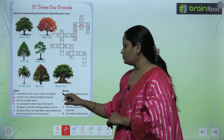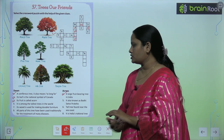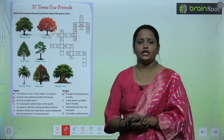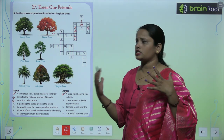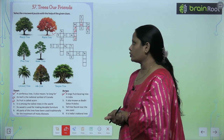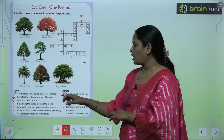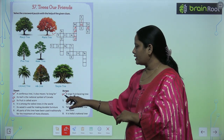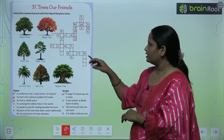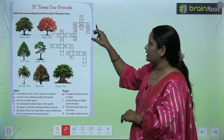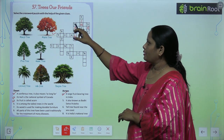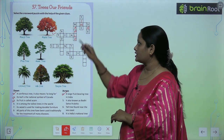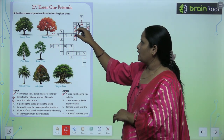Now let's do the across clues. A large fruit-bearing tree in India — there are many fruits on it. For number two across, we fill it: M, N, O, O — and this tree is called mango.